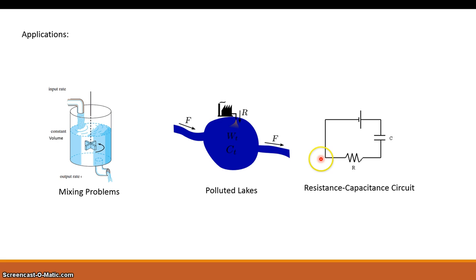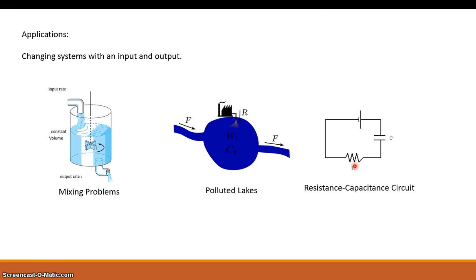You'll also see this a lot with electrical examples — resistance-capacitance circuits. You've got a capacitor in a circuit with an input of a certain type of voltage, a certain resistance, and you want to know how fast the capacitance reaches its full potential and dissipates its charge. So you're looking at changing systems with an input and an output — that's what all these examples have in common, and there are many more examples beyond just these three.